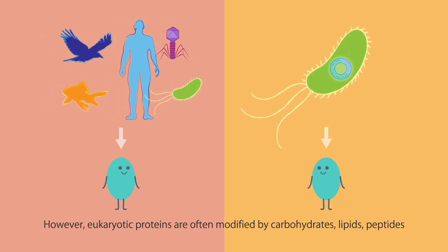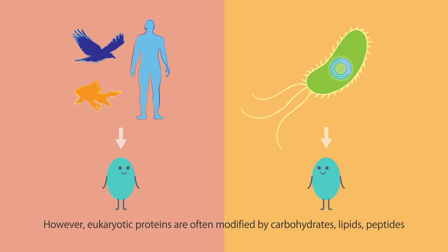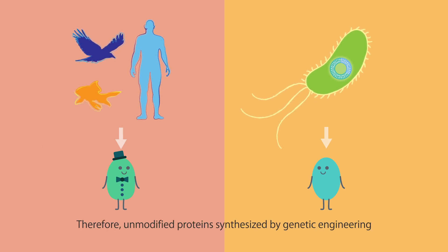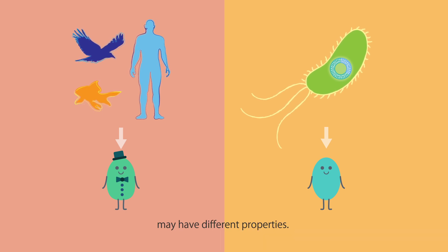However, eukaryotic proteins are often modified by carbohydrates, lipids, peptides, or other kinds of molecular groups after translation. Therefore, a modified protein synthesized by genetic engineering may have different properties.